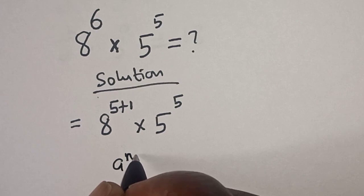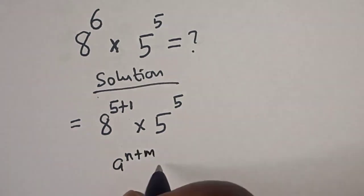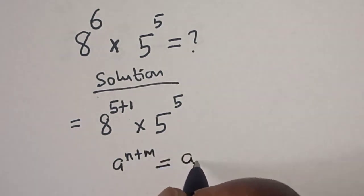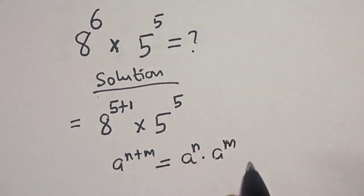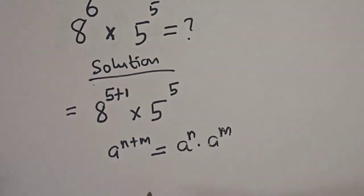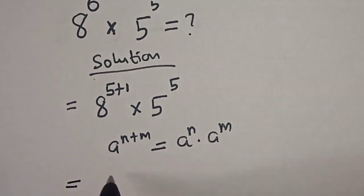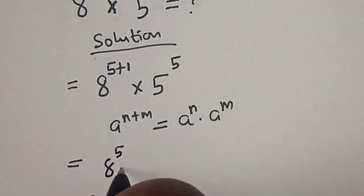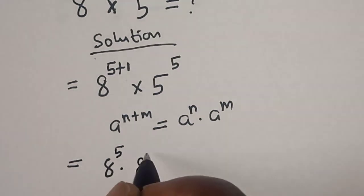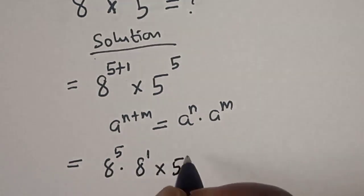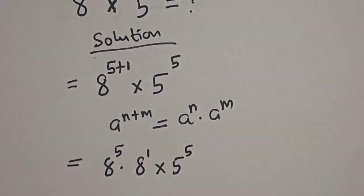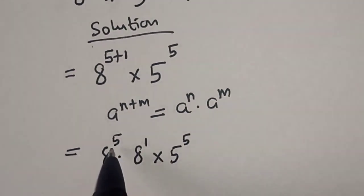Remember this rule: if you have a raised to the power n plus m, this is equal to a to the power of n multiplied by a to the power of m. So this becomes 8 to the power of 5 multiplied by 8 raised to the power 1, then multiplied by 5 to the power of 5.